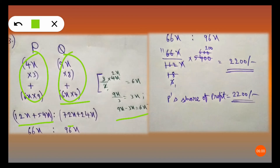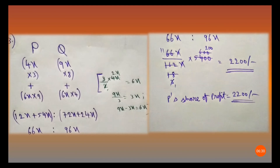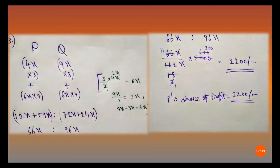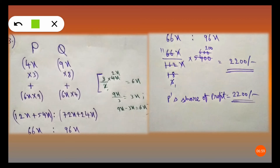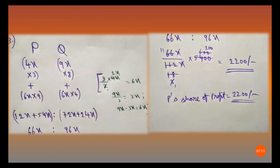After complete simplification: P's total = 12x + 54x = 66x; Q's total = 72x + 24x = 96x. P's share of the profit is 66x divided by (66x + 96x) = 66x / 162x. Cancelling by 9 gives 22/54, then by 6 gives 11/27. So P's share = 11/27 into 5,400 = 2,200 rupees. P's share of the profit is 2,200 rupees. Option A is the correct answer. Hoping that you have understood the questions and solutions.